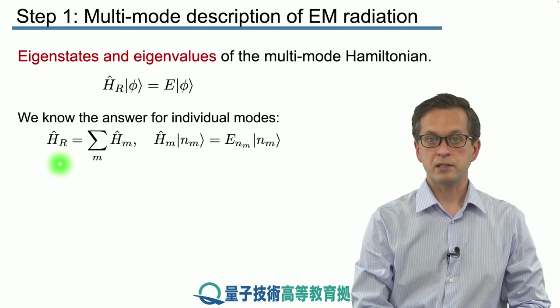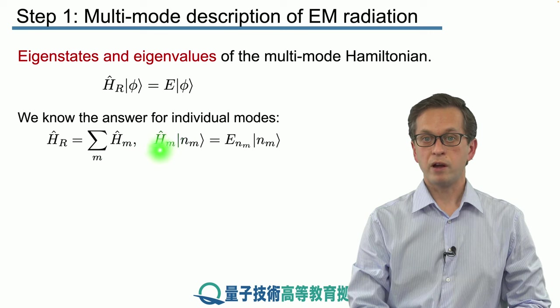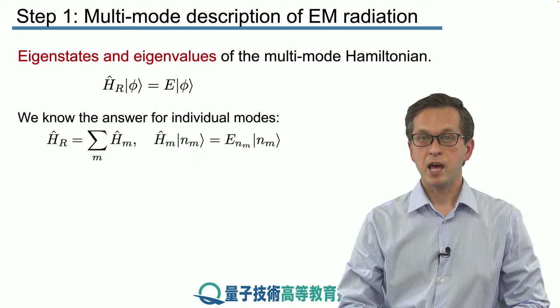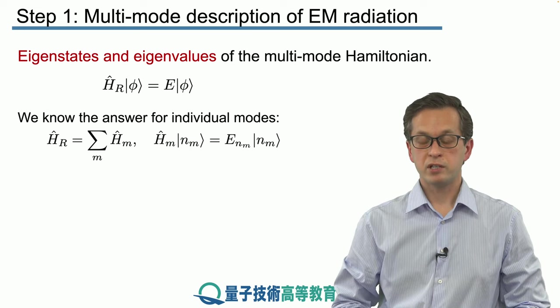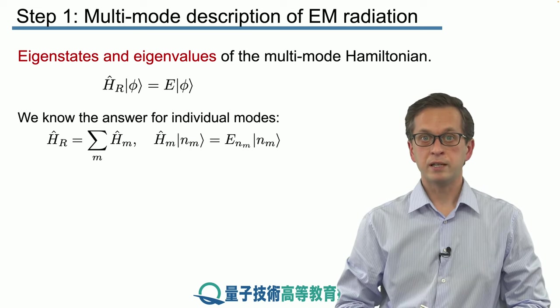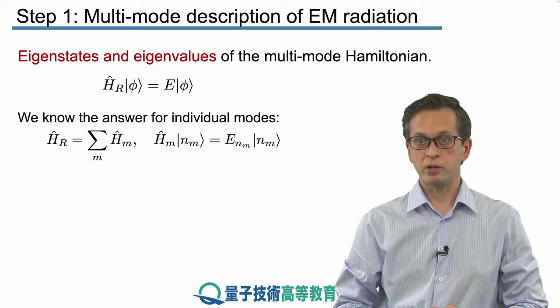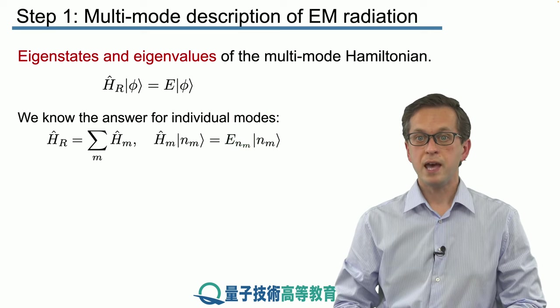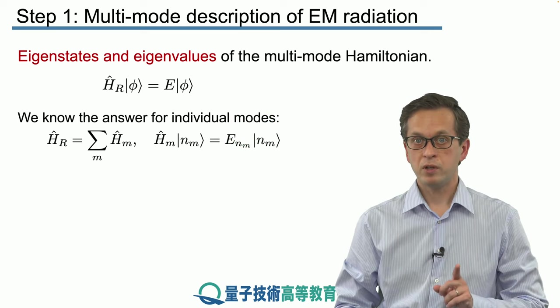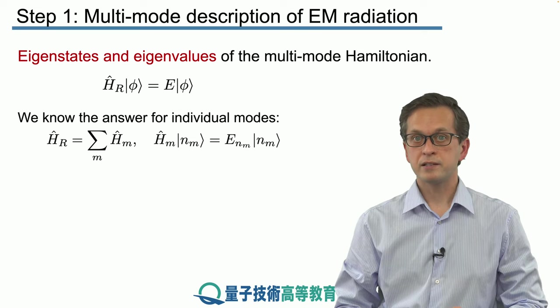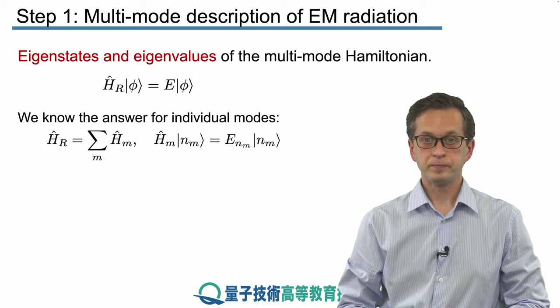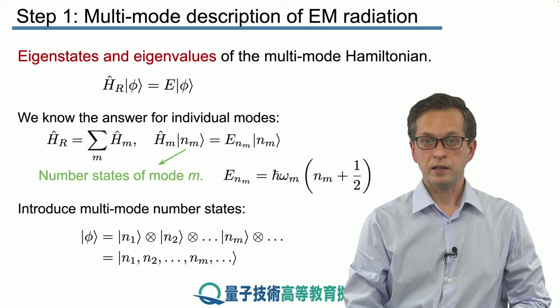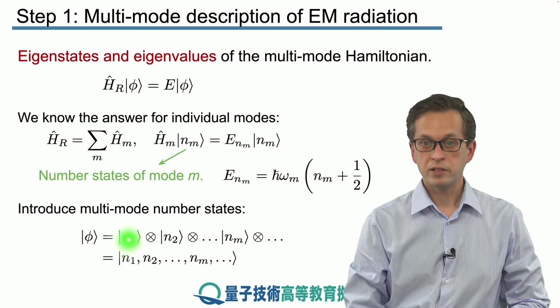So the total Hamiltonian is the sum over individual mode Hamiltonians, where each individual mode Hamiltonian has eigenstates n, m. These are our number states from previous lessons, but this time we have to include an index m to keep track of which mode we are talking about. The eigenvalues of this mode Hamiltonian are given by E, n, m, where m is the index of the mode and n tells us in which energy level we are.